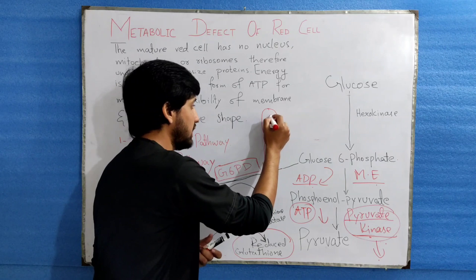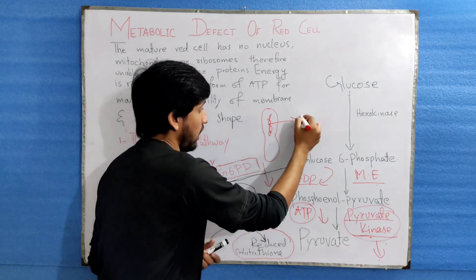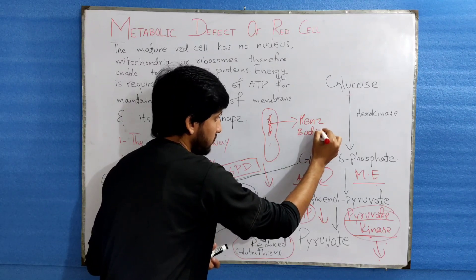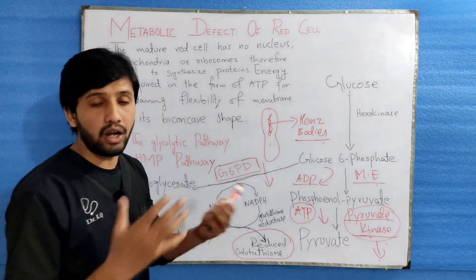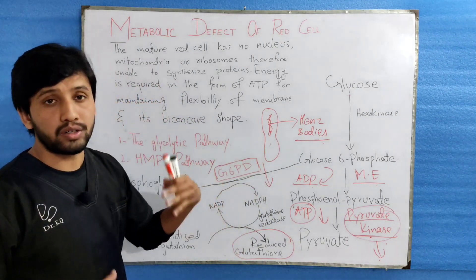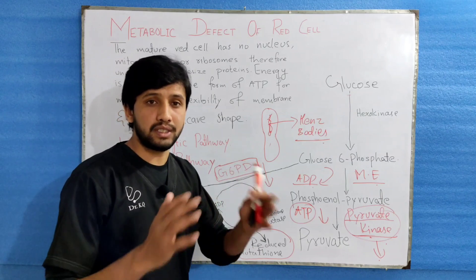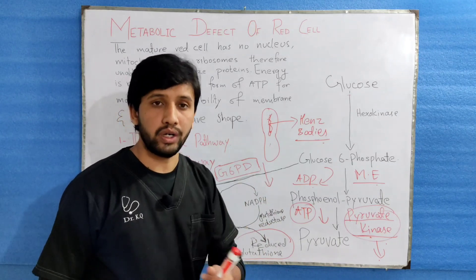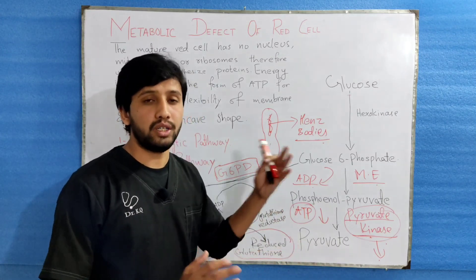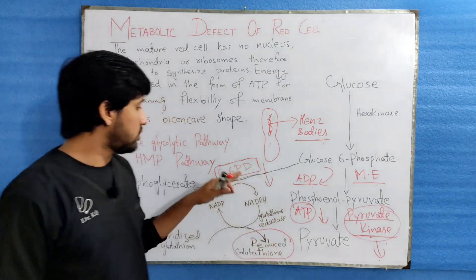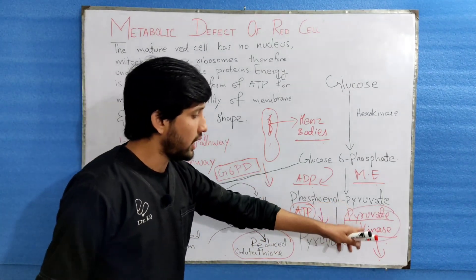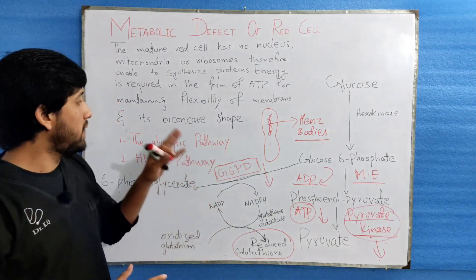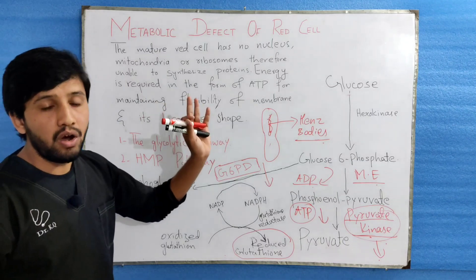Decreased reduced glutathione leads to hemoglobin precipitation into the red cell membrane. These precipitates are called Heinz bodies. This results in lysis of the RBCs, and the destruction of RBCs leads to anemia. There can be acute hemolytic anemia or chronic hemolytic anemia, as well as other clinical features. These two enzymes — G6PD and pyruvate kinase — are very important for energy production and maintenance of the biconcave shape and flexibility of the red cell membrane.